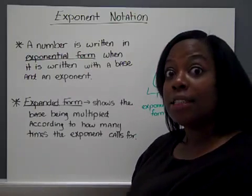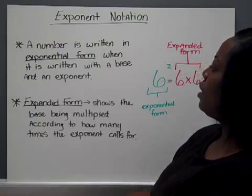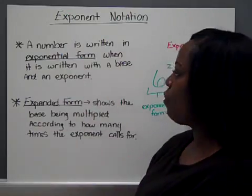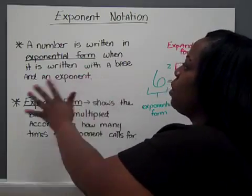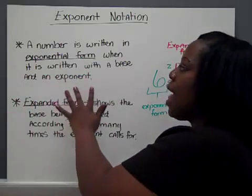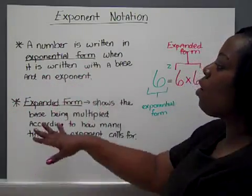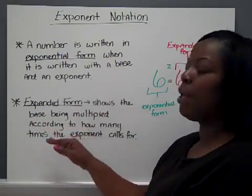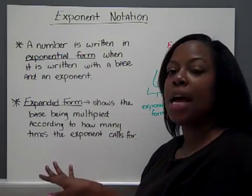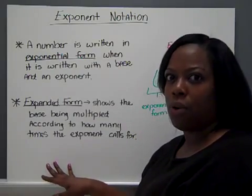Now, how you write an exponent depends on what form you're looking for. A number is written in exponential form when it is written with a base and an exponent. Or, you could write it in expanded form, and this is when you will actually show the base being multiplied according to how many times the exponent calls for.